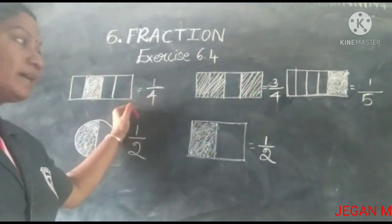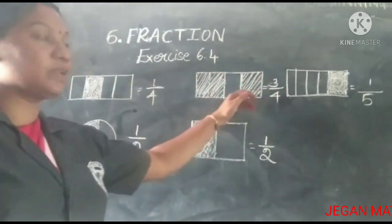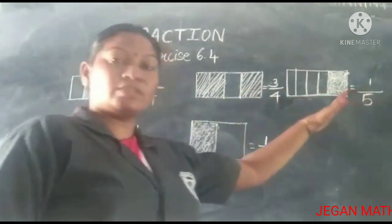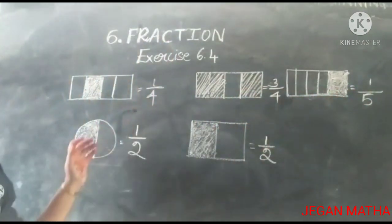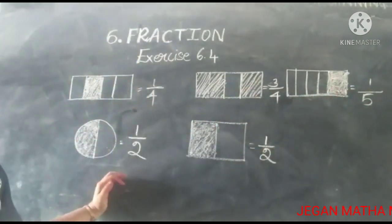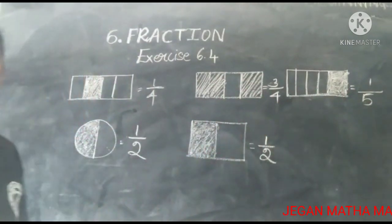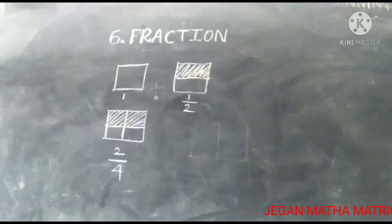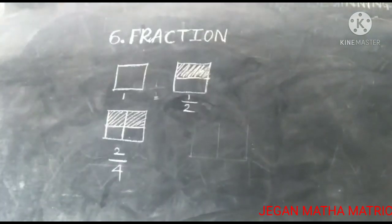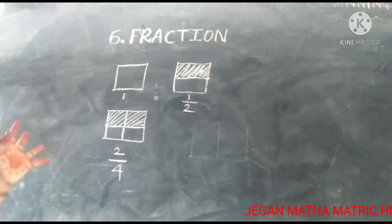So the fractions for the given pictures are: one-fourth, three-fourths, one-fifth, and half — one-half. One-half is the fraction for the shaded portion.